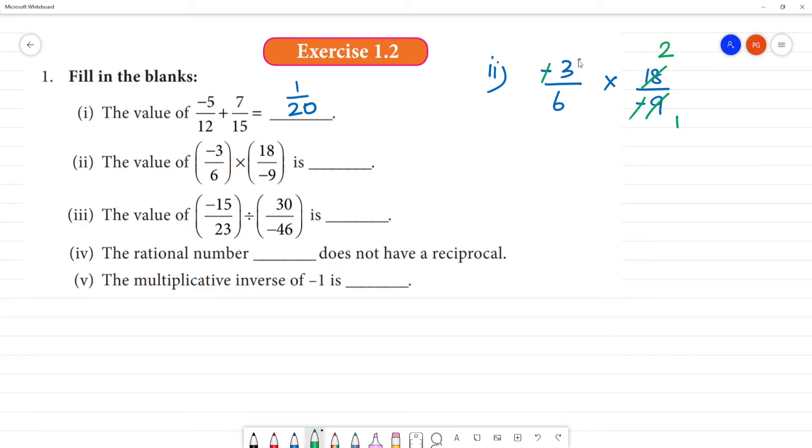Here you can see, 3 is 3, 2 into 3 is 6. Then 2 and 2 will cancel. 1 multiplied by 1 is 1, 1 multiplied by 1 is 1. The answer is 1.